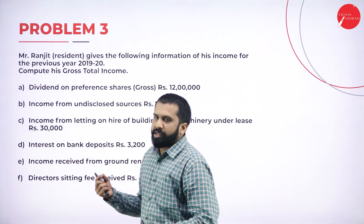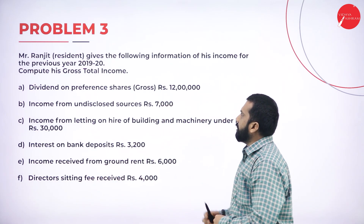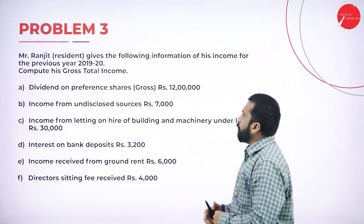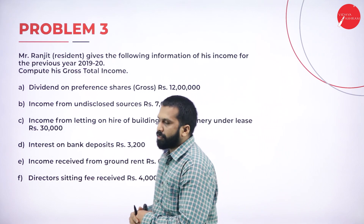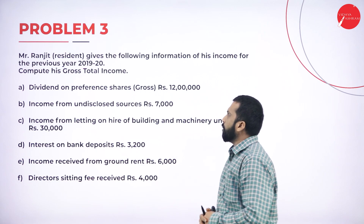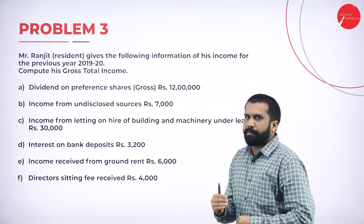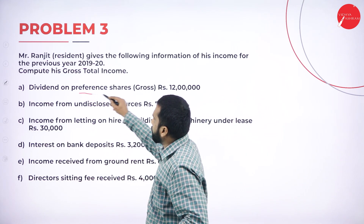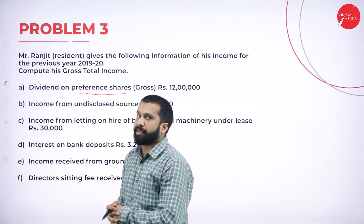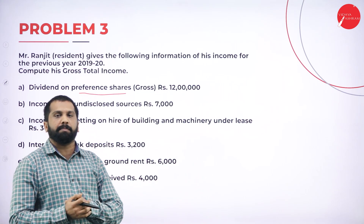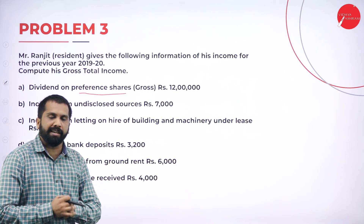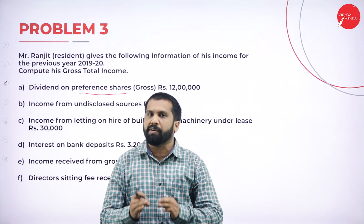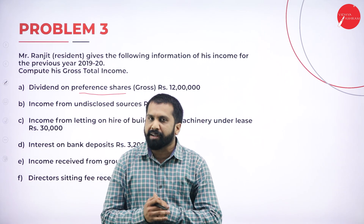Problem number three: Mr. Ranjit, a resident individual, gives the following information of his income for the previous year 2019-20. Compute his gross total income. First item: dividend on preference shares. Have they mentioned a foreign company? No. If it is an Indian company, dividend is always exempted.